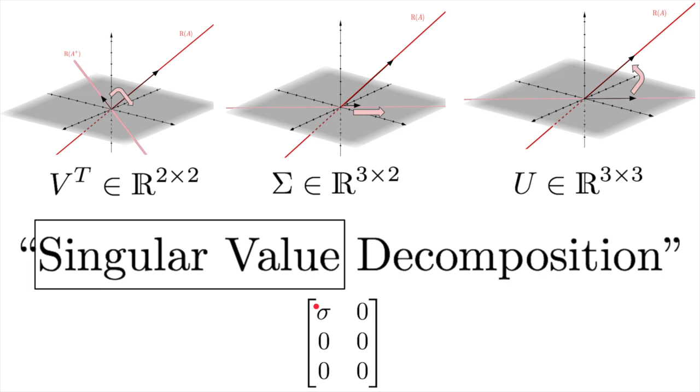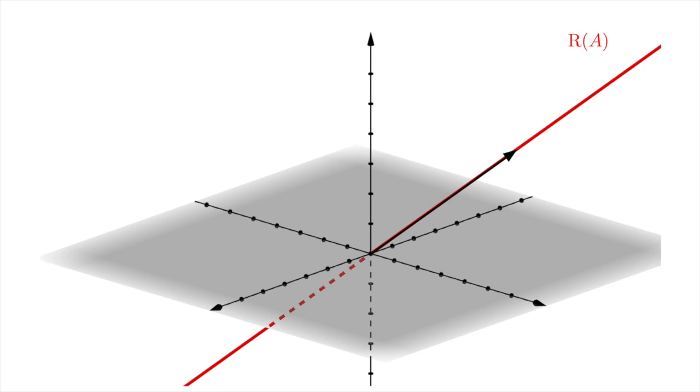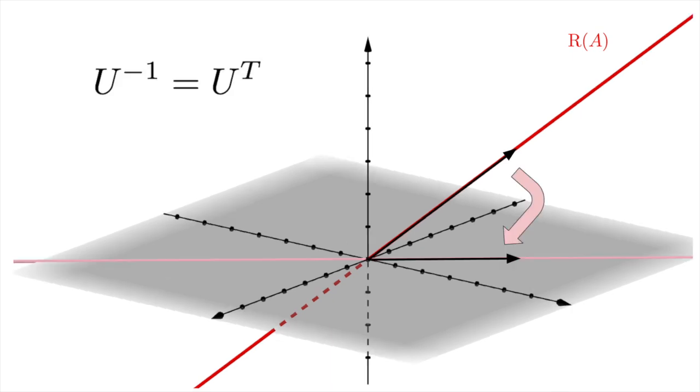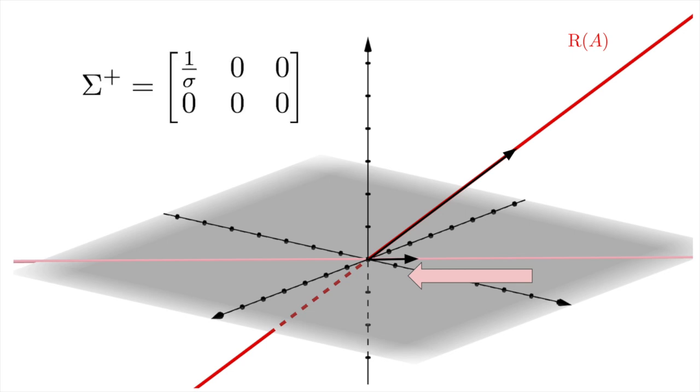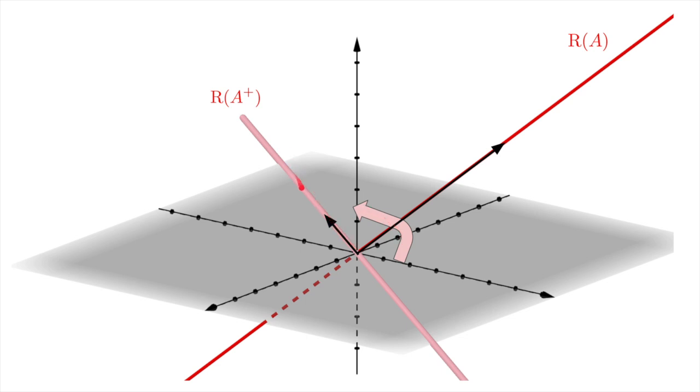This decomposition also gives an intuitive way to understand the pseudo-inverse. For the pseudo-inverse, we start with a vector in the range of A. We rotate it in the reverse direction, which is equivalent to multiplying by U's inverse, which is U's transpose because U is orthogonal. Then we scale the vector down. This is equivalent to multiplying by a matrix that contains the reciprocals of all the non-zero entries in the sigma matrix. We also flip the dimensions so that it becomes a transformation from R3 to R2. It turns out that this is actually the pseudo-inverse of sigma. Finally, we rotate it back to the original orientation to arrive at the range of A+. Like with the first rotation, this is equivalent to multiplying by the inverse of V transpose, which, because V transpose is orthogonal, is V transpose's transpose, which is V.